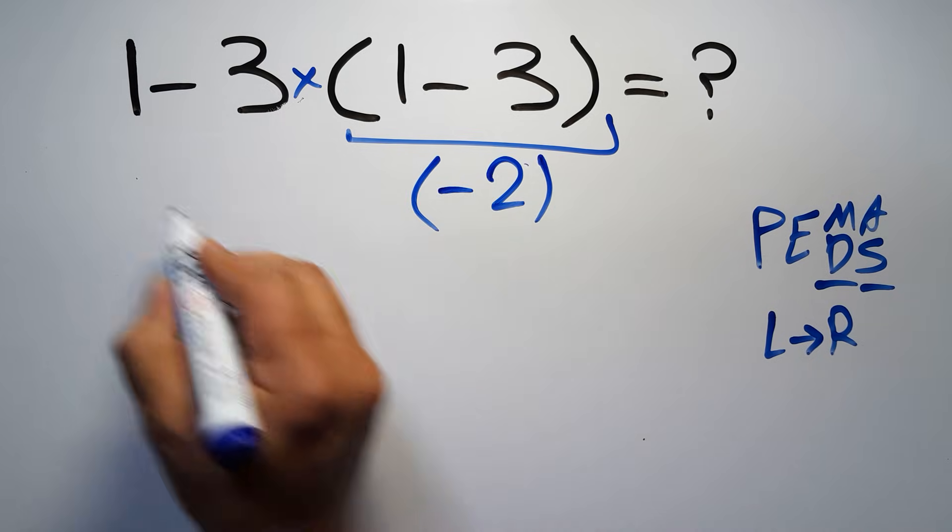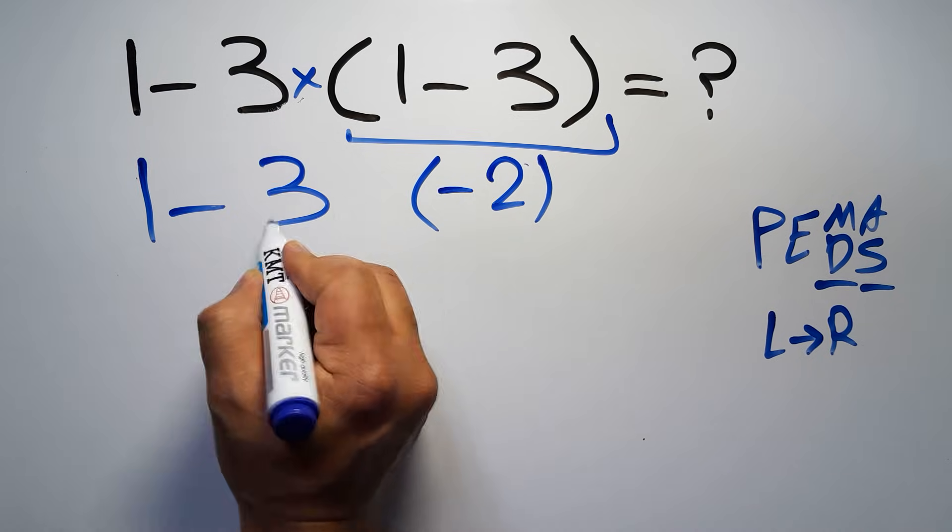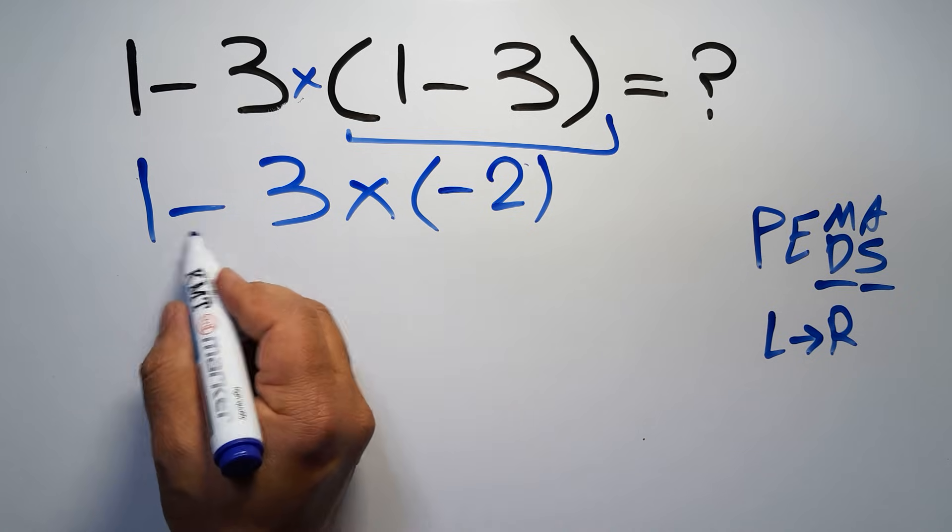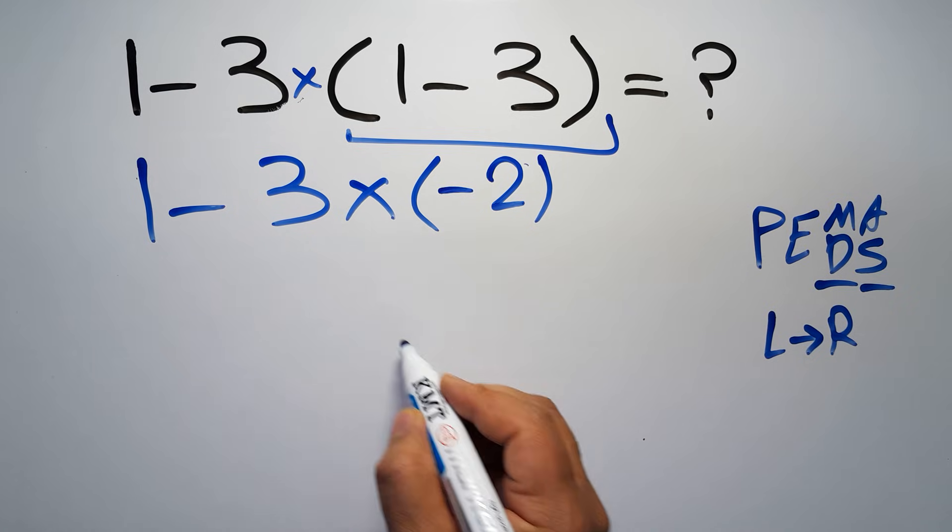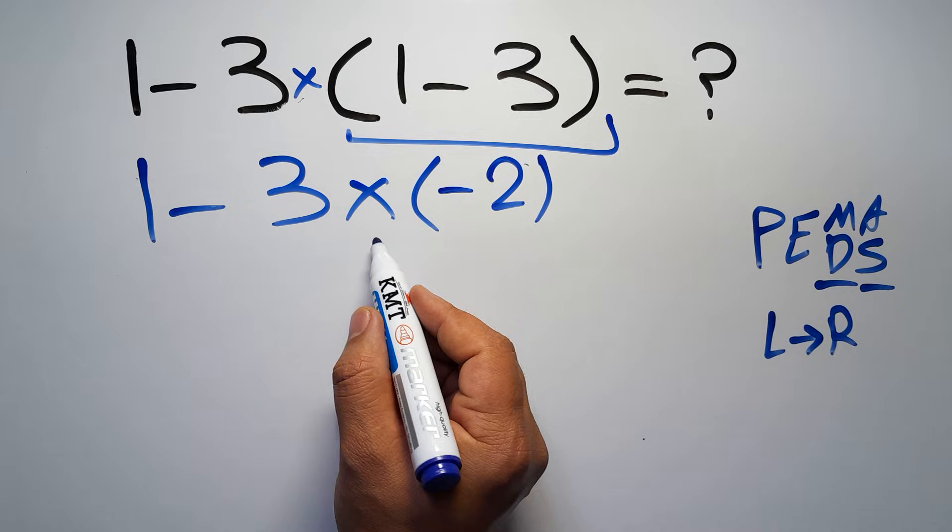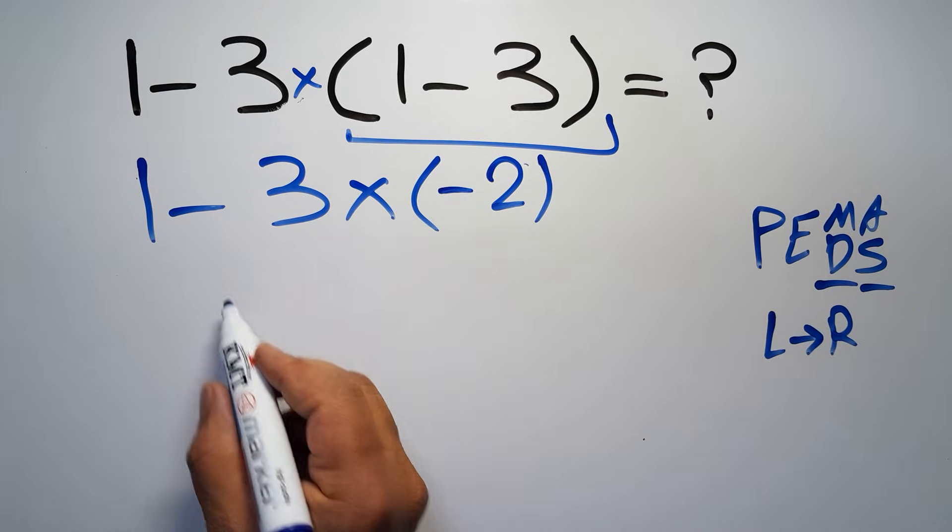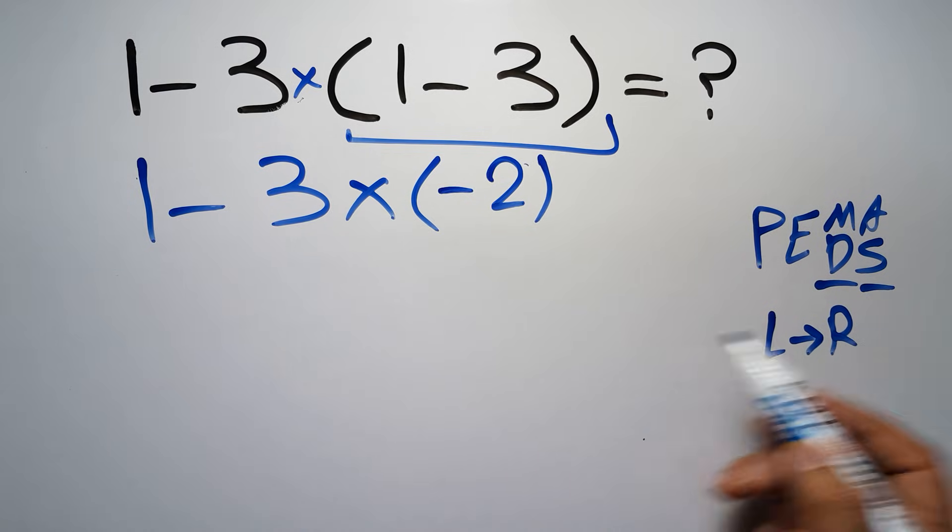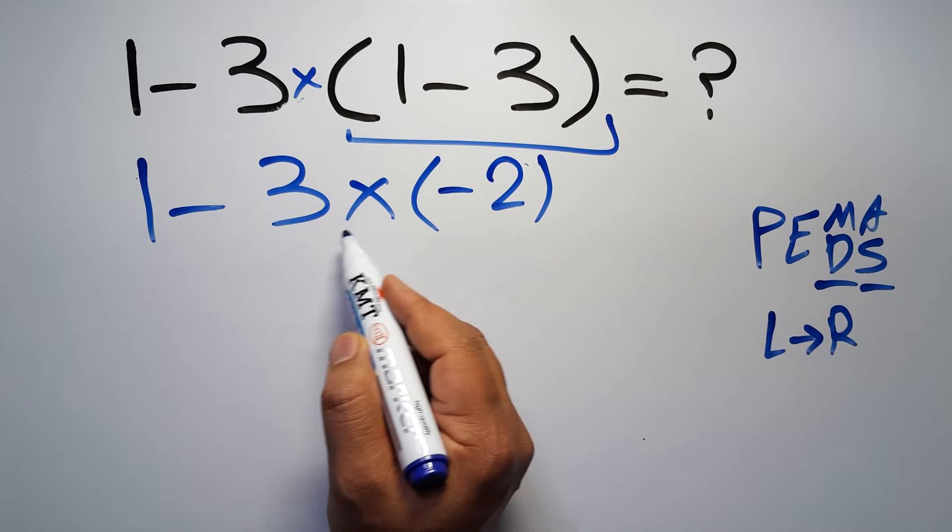Now we have 1 subtraction and 1 multiplication. According to the PEMDAS, multiplication has higher priority than subtraction because multiplication comes before subtraction. So here first we have to do this multiplication.